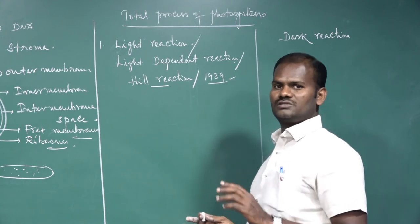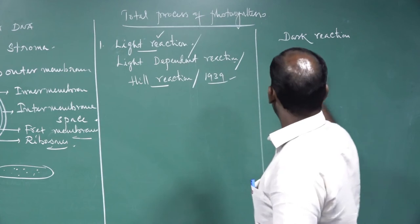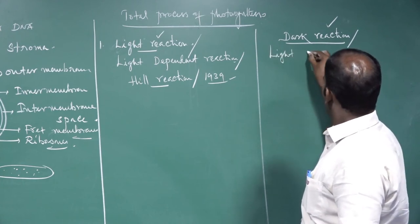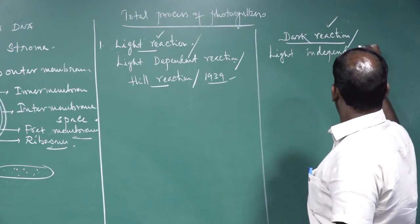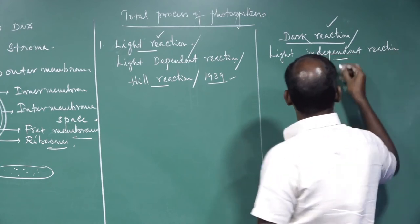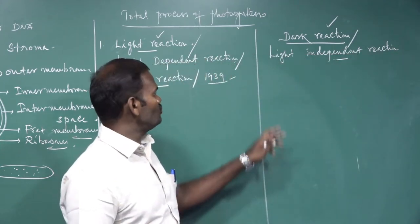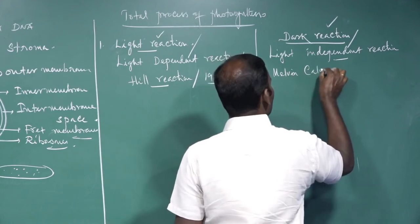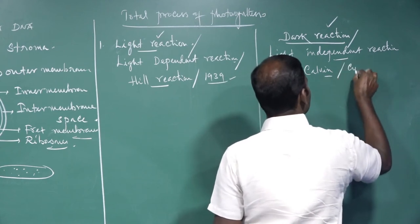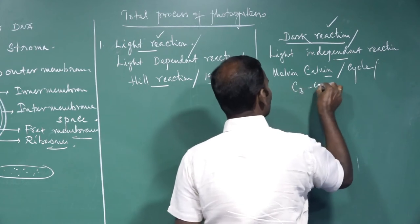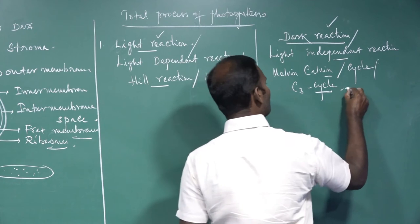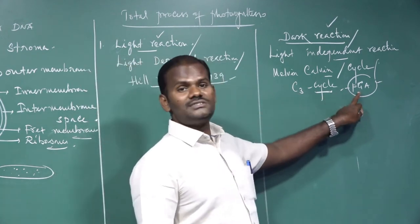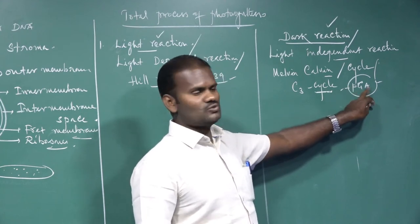The total process of photosynthesis includes two groups: one is the light reaction and another is the dark reaction. The dark reaction is also called the light-independent reaction, because light is not essential for it. It was first demonstrated by Melvin Calvin, so it is called the Calvin cycle — also called the C3 cycle, because the first stable product is a 3-carbon compound called PGA, phosphoglyceric acid.